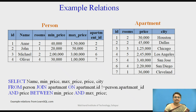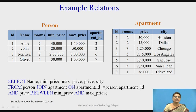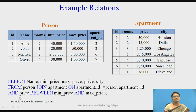Now let us look at example relations: the person relation and the apartment relation. We use the same query — selecting name, minimum price, maximum price, price, and city. The join condition is: apartment ID not equal to person's apartment ID, AND price BETWEEN minimum price AND maximum price. Let us see both techniques applied to this example.